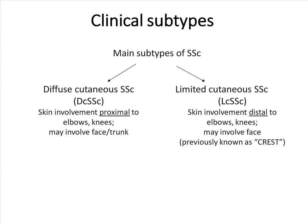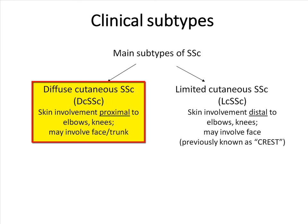There are two main subtypes of systemic sclerosis categorized based on the extent of skin involvement: diffuse and limited cutaneous systemic sclerosis. It is important to note that diffuse and limited do not refer to the extent of organ involvement, but to the extent of skin involvement. In diffuse cutaneous systemic sclerosis, involvement starts distally from the fingers and extends proximally above the elbows and knees. In the limited subtype, skin involvement also starts in the fingers but does not extend proximal to the elbows and knees. The face may be involved.